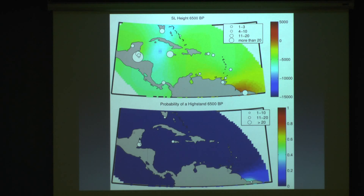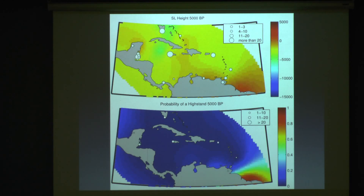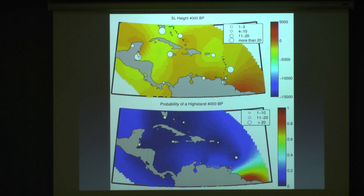Moving forward to 6,500 and then 6,000 years before present, it's about this time that we see a higher probability of sea level higher than present in this location — of a magnitude of around 1 meter. Going forward in time, we see the magnitude of this increases to about 1.5 meters, and there's a high probability of sea level higher than present, and this continues to 4,000 years BP. What this suggests is the influence of glacial isostatic adjustment and subsidence from the proglacial forebulge that extends further south into the Caribbean, which is consistent with some previous modeling studies, namely by Glenn Mill and Kurt Lambeck in this location.